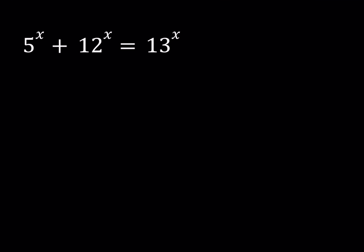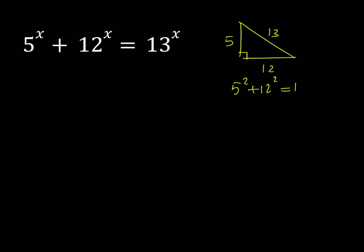We have 5 to the power x plus 12 to the power x equals 13 to the power x. If you've ever done geometry and especially used the Pythagorean theorem, you must be familiar with something like this. At this point you could probably tell that if x is equal to 2, then we're going to get a solution. Because 5 squared plus 12 squared equals 13 squared — those are the legs and hypotenuse of a right triangle. But is it possible that any other power of 5 and 12 when added gives us the same power of 13? Let's explore.